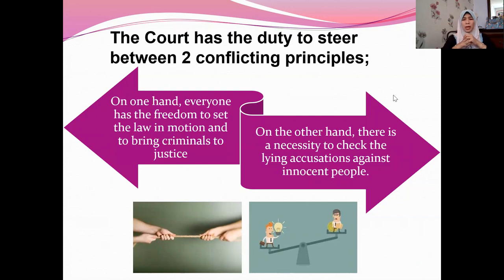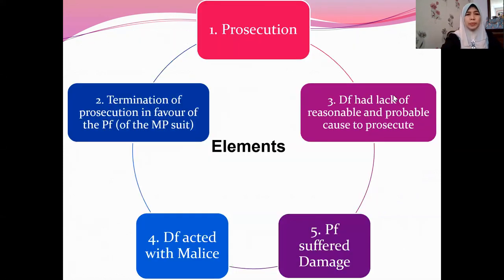Even though the percentage is not that high, there do exist cases in which innocent people have been convicted. So as far as possible, we want to prevent those things from happening. There are five important elements for the plaintiff to prove in order to bring suit on malicious prosecution.